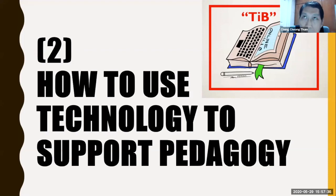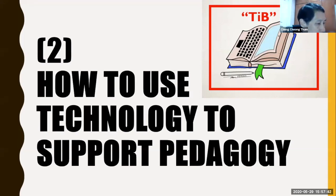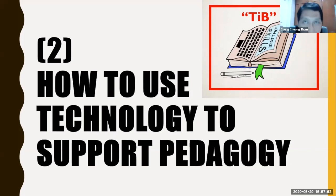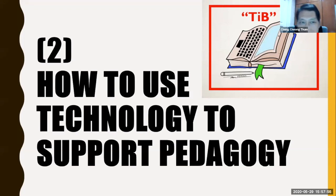I started looking at ways to get students to do a few things — what we call the strategy: learning objective, critical thinking, key concept, and finally the overview. So I have four main things to look at when I start using technology.